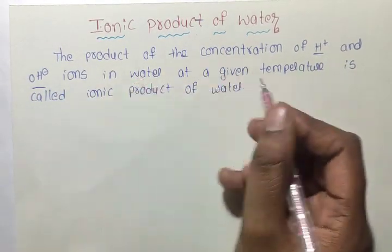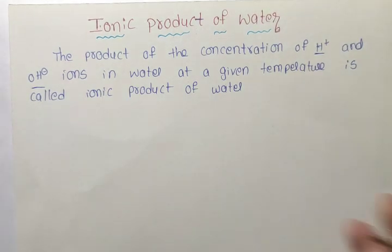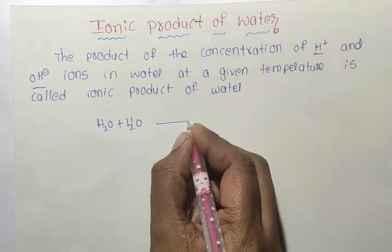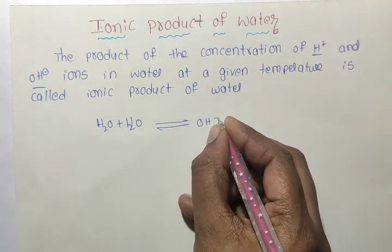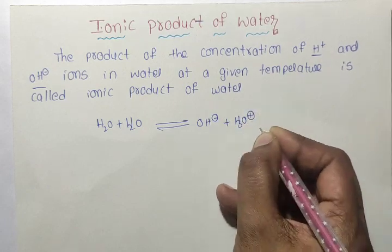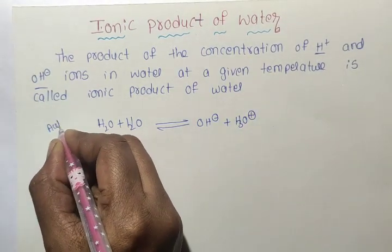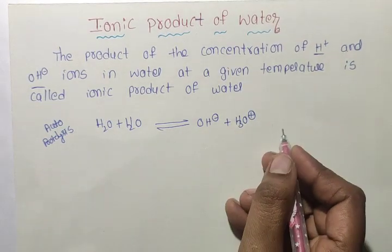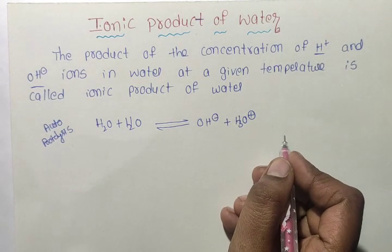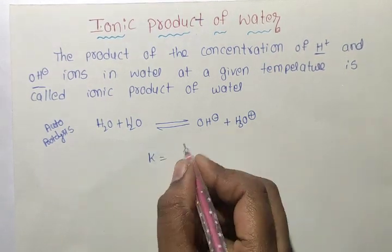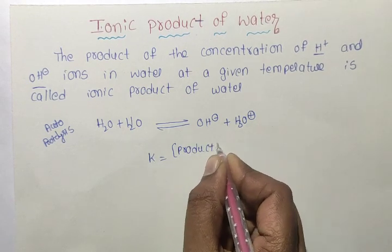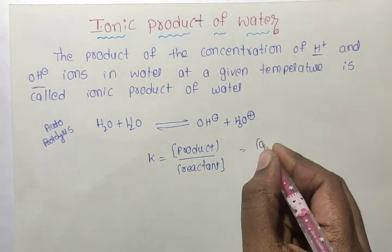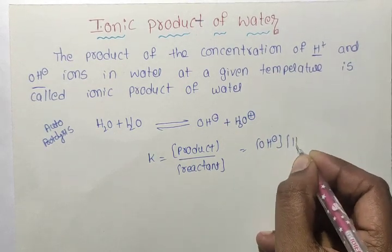In water, H⁺ and OH⁻ ions are present at a given temperature. The reaction is simple: H₂O plus H₂O in equilibrium gives OH⁻ plus H₃O⁺. This process is called Autoprotolysis — the self-ionization of water producing hydroxide and hydronium ions.